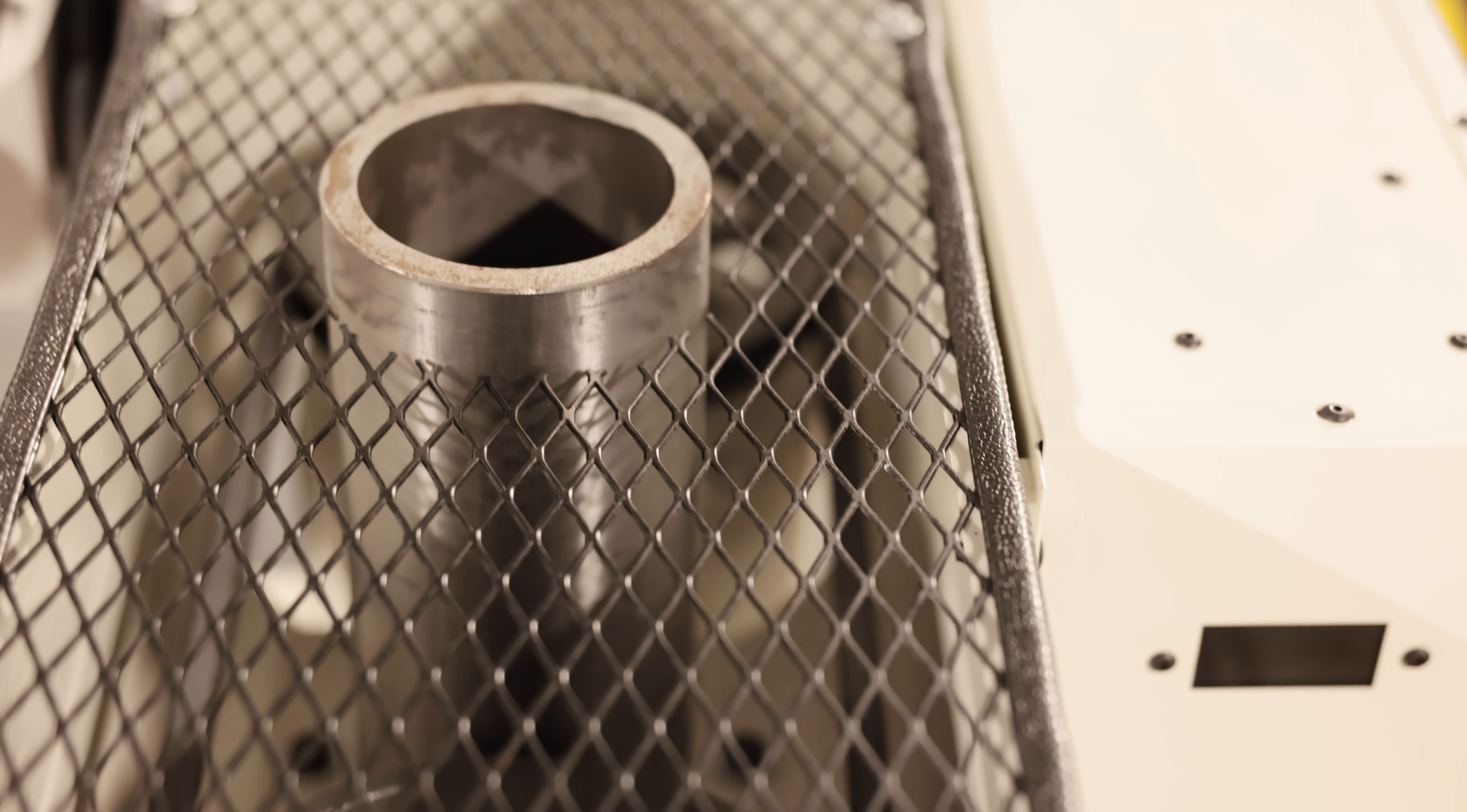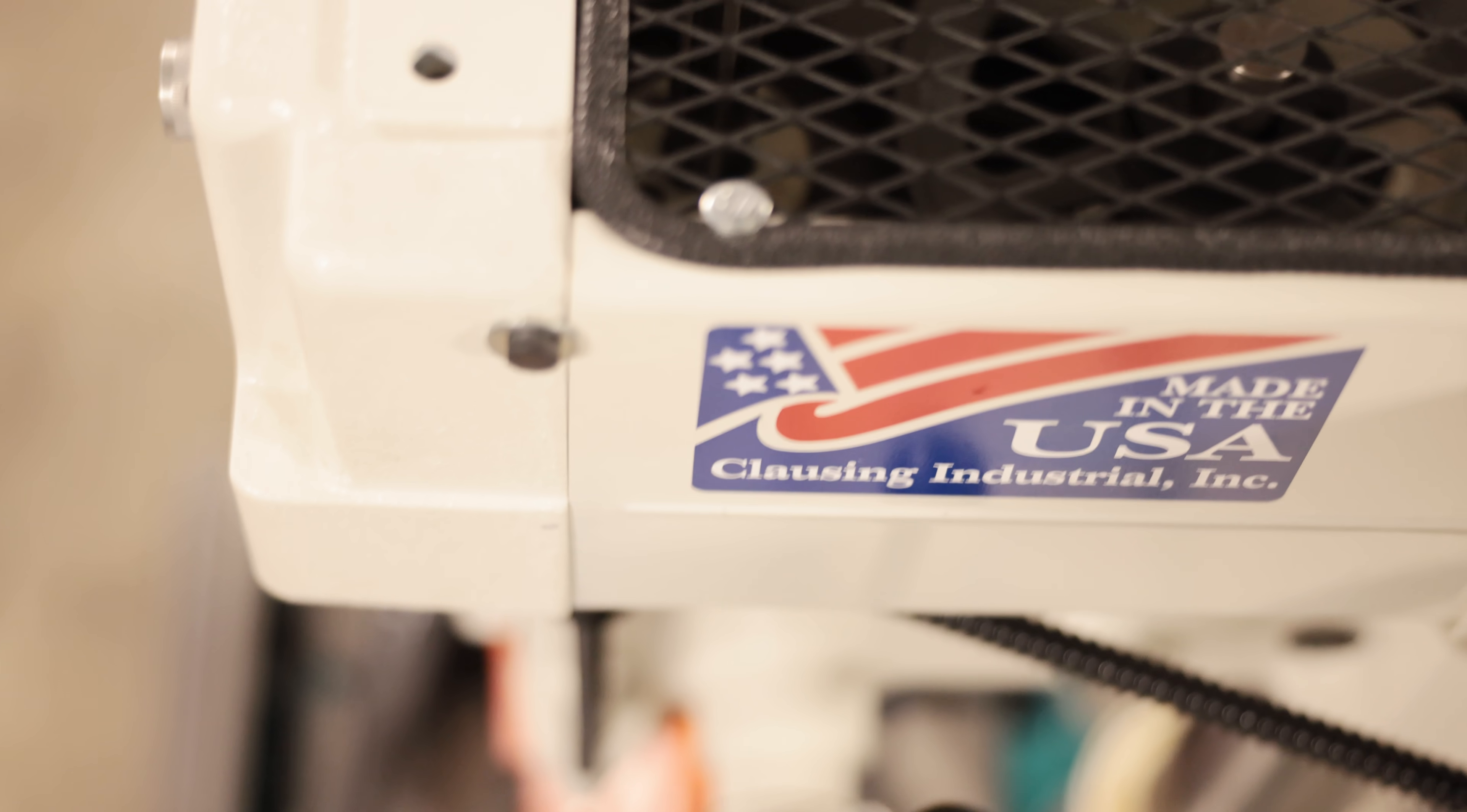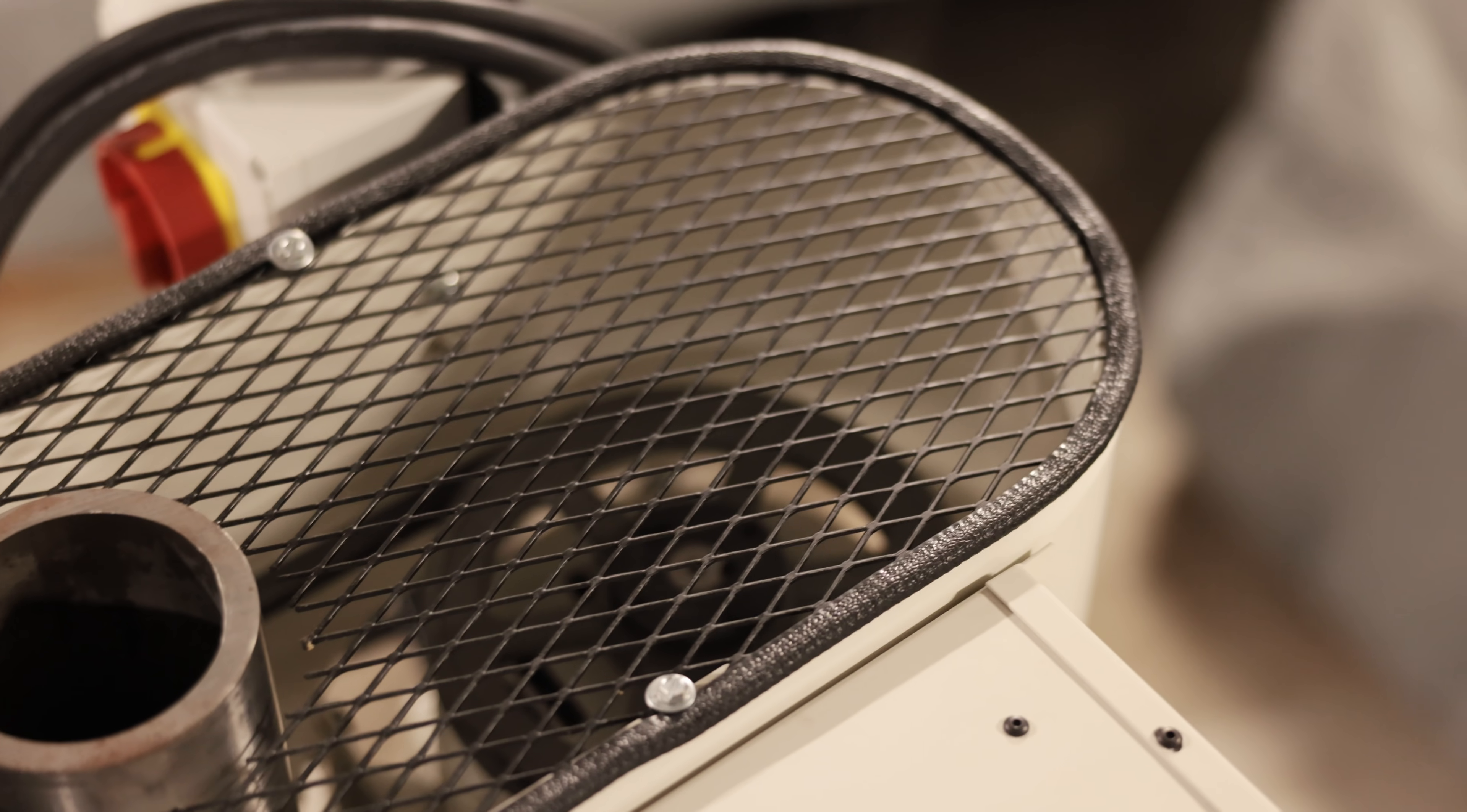You can see behind the mesh top belt guard Clausing's heavy duty drive, three V belts and a cog belt, delivering positive full power to the spindle at all speeds. This differs from regular Clausing drill presses which have a standard Reeves drive.